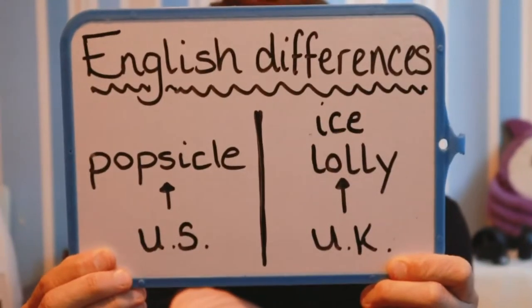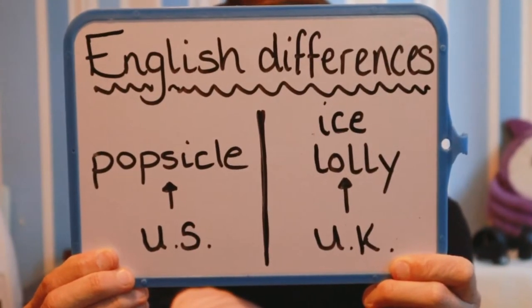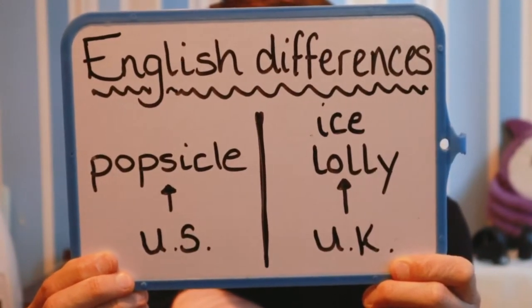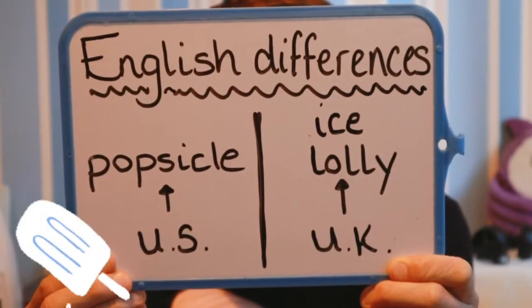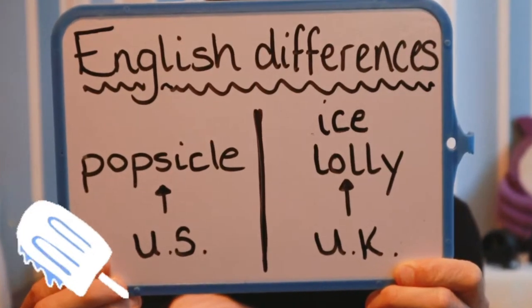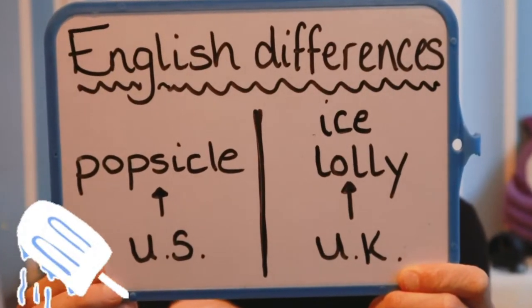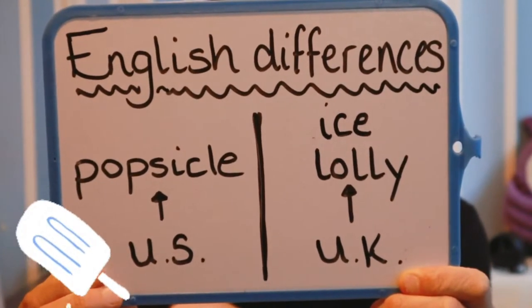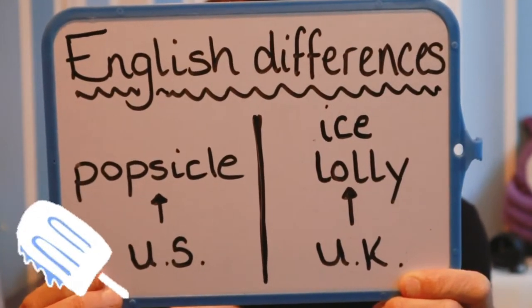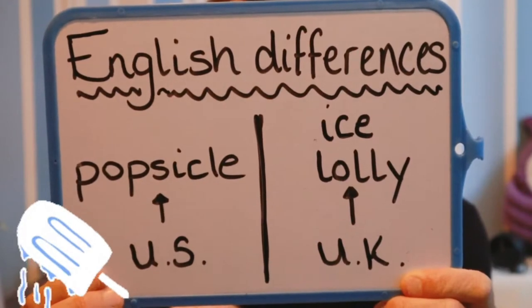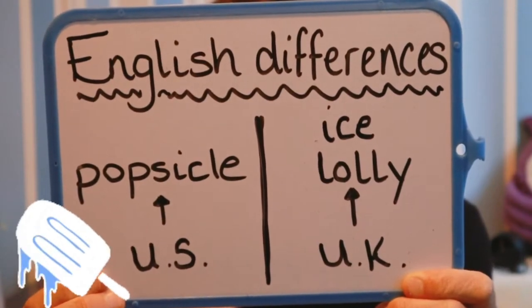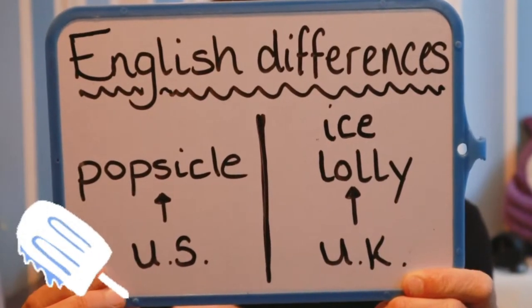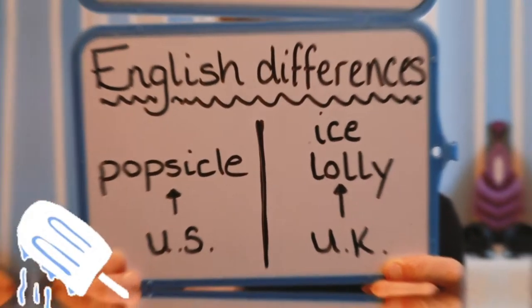Now let's take a look at the first word difference. In the US they would call this a popsicle, but in the UK we call it an ice lolly.